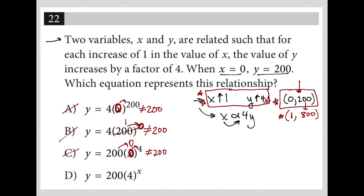If x were 0, 4 to the 0 power. Now anything to the 0 power is equal to 1. So this is 1. And then 1 times 200 actually is equal to 200. So choice D must be the correct answer. I didn't even need to use this 1 and 800 because I was able to narrow down the correct answer by focusing on the information provided that says that when x is 0, y should be equal to 200.